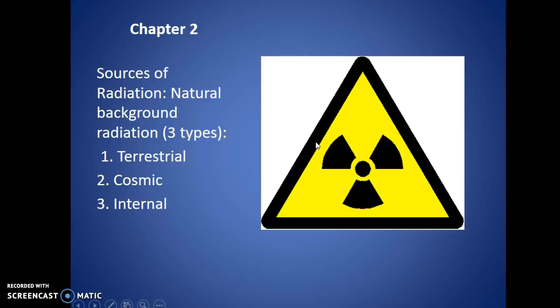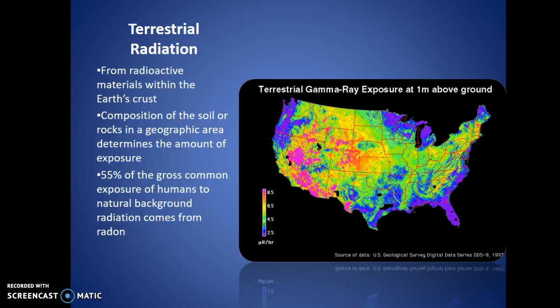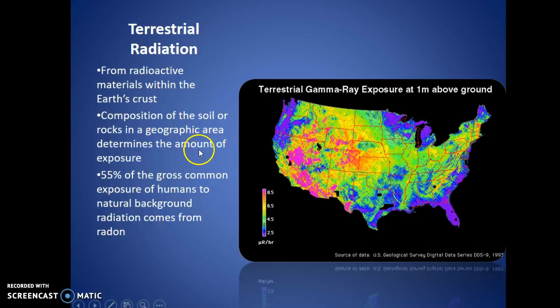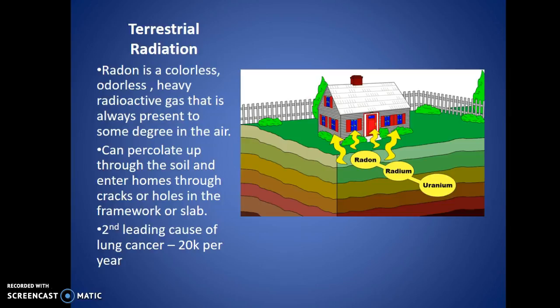Sources of natural background radiation fall into three types: terrestrial, cosmic, and internal. Terrestrial radiation comes from radioactive materials within the Earth's crust — basically from soil, rocks underneath. 55% of the total common exposure to humans from natural background radiation comes from radon. Radon is a colorless, odorless gas with heavy radioactivity. It's always present to some degree, coming from uranium and radium underground, creating this gas that seeps through — usually through cracks in a foundation.